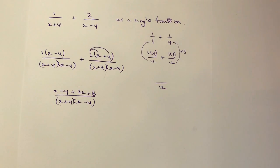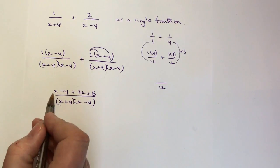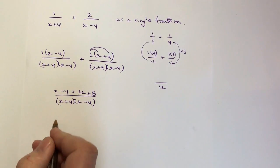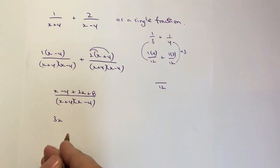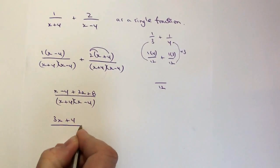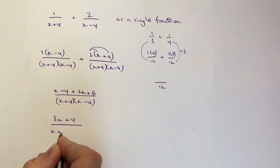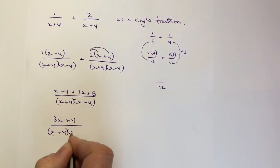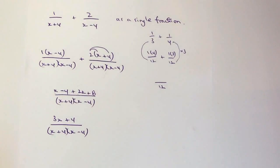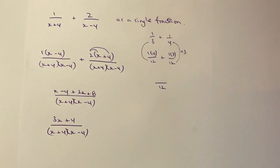Okay so now I'm going to gather up the like terms and make it just look a little bit better. So I've got x there and 2x there. Well I'm going to write that as 3x. I've got minus 4 and plus 8 and that's going to be plus 4 and that's all divided by x plus 4 times x minus 4. And that's the answer to this particular question.